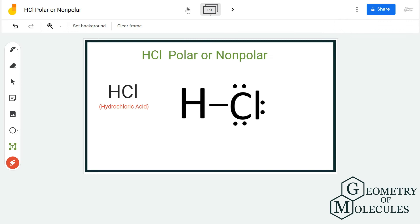Hi guys, today in this video we are going to find out the polarity for the HCl molecule. It's the chemical formula for hydrochloric acid and is made up of one atom of hydrogen and one atom of chlorine.